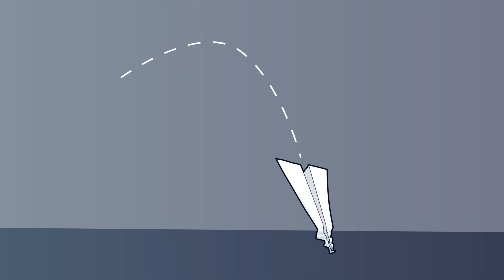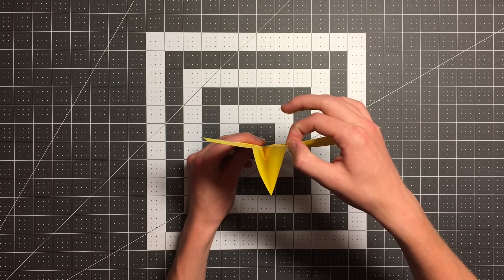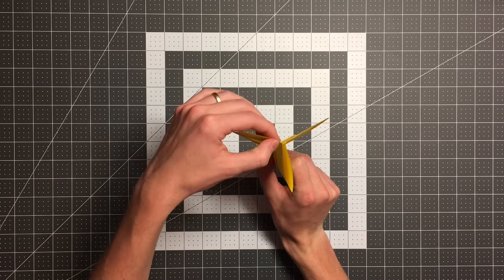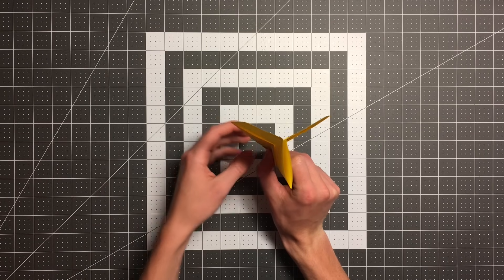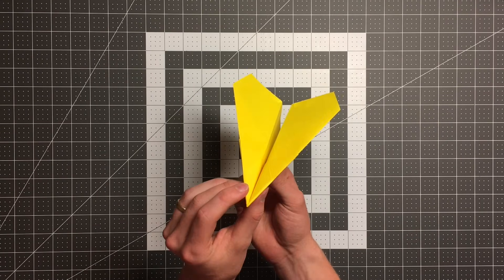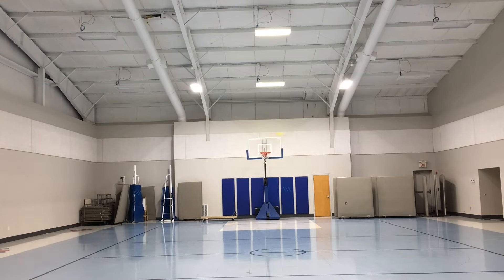Now if your plane dives or doesn't glide as well as you like — and this is a really common problem — all you have to do is make an elevator adjustment. Elevators are located at the rear of the plane on a horizontal wing. Just bend the wing upward slightly on both sides of its center. Small adjustments go a long way. If you bend the wing too much, your plane will climb and stall and then crash, so don't do that.